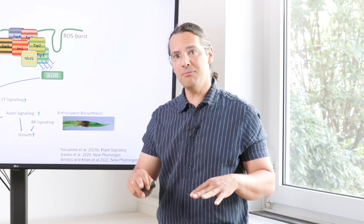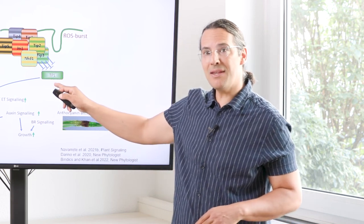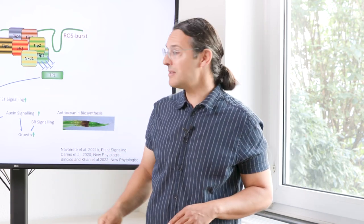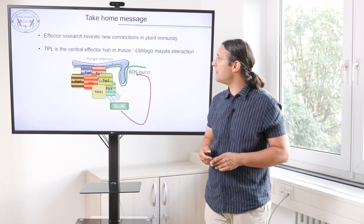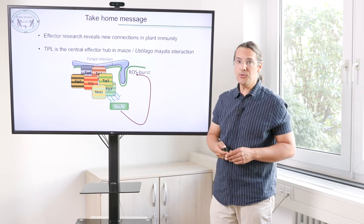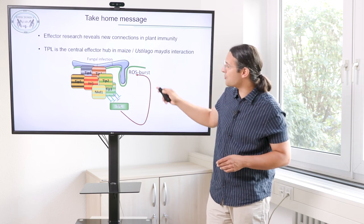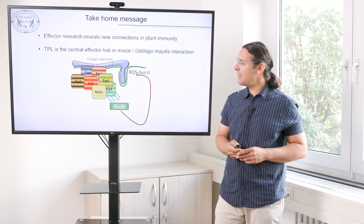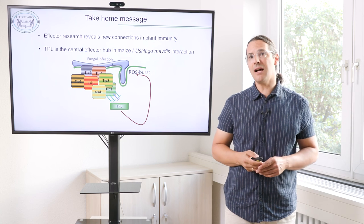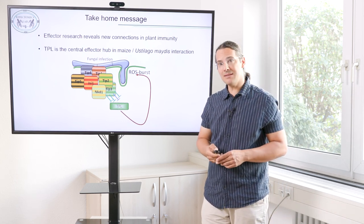So there is an evolutionary equilibrium — evolved to manipulate Topless via effectors, but not to over-manipulate it. The take-home message is that effector research reveals new connections in plant immunity, such as Topless controlling ROS burst. The TPL — Topless proteins — are essentially an effector hub for the Ustilago maydis–maize interaction.